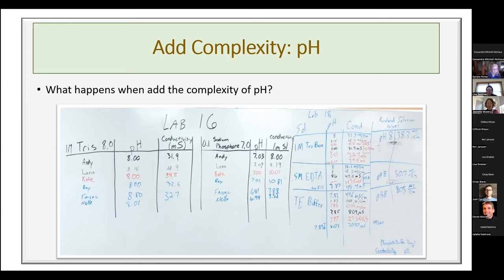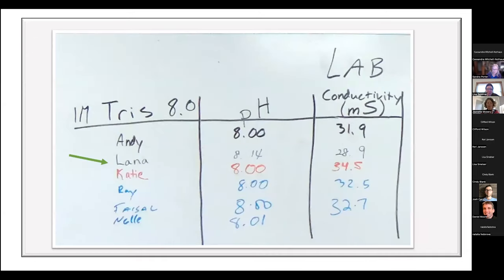Looking at data for a 1 M Tris buffer: most students' pH values line up well, except for Lana's at 8.14. Without a quality control measure, Lana probably wouldn't think anything was wrong — 8.14 doesn't look terrible. But looking at conductivity too, you can see she probably didn't add enough HCl and stopped too soon in bringing the pH down to pH 8. Everyone learns from this, but Lana probably learned the most.